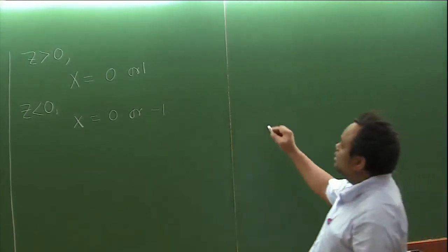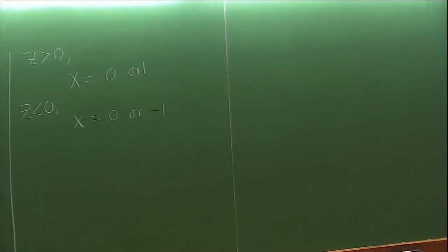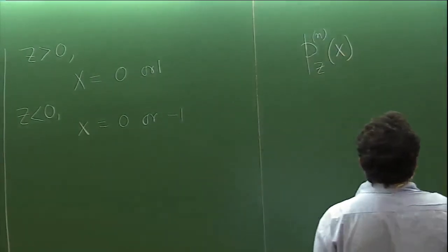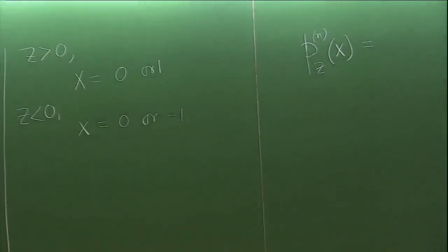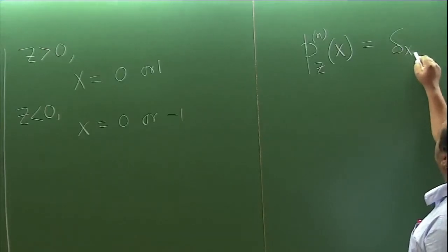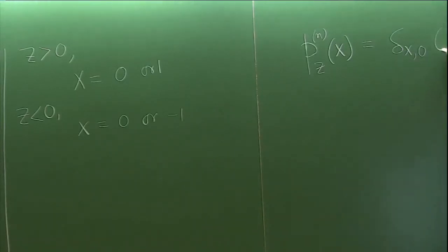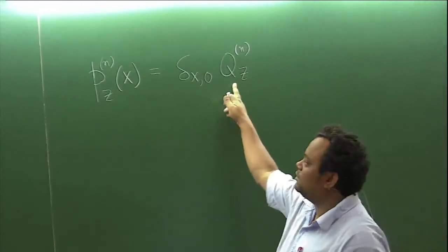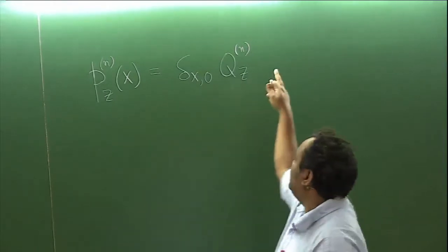So let us now write down the evolution equation for this. There could be different events. What will be the contribution to this probability from the event that till time step n, this hole has never come back to 0? Then x will remain 0. This happens with the probability that a hole starting from z has never visited the origin in step n.